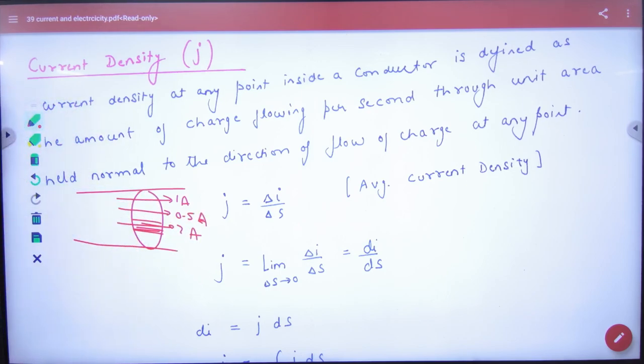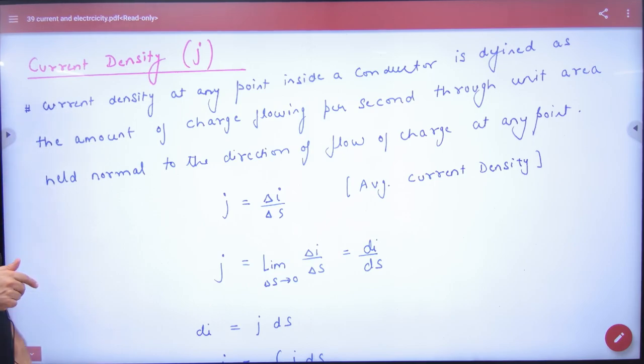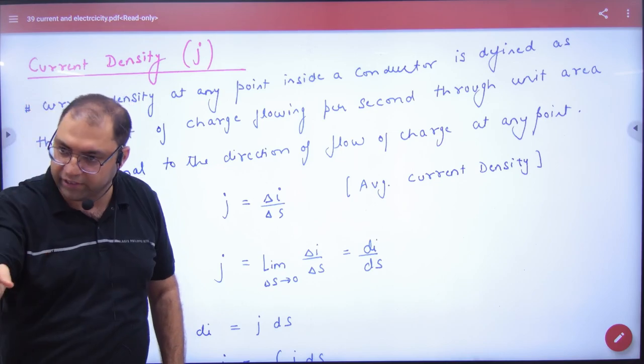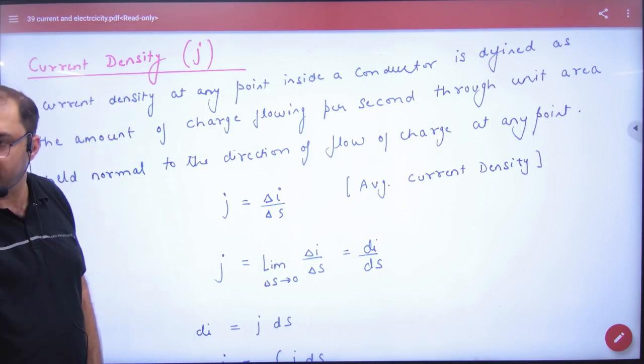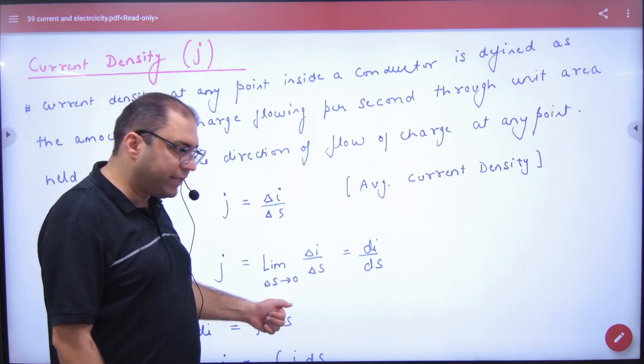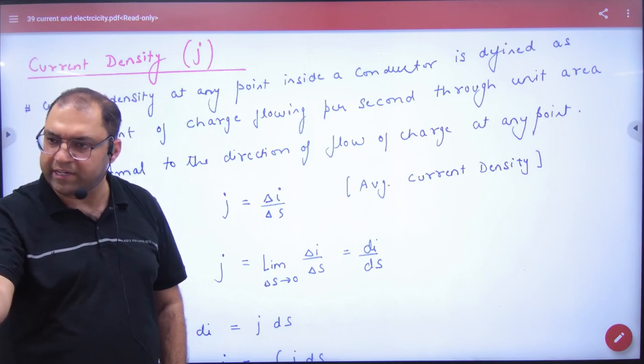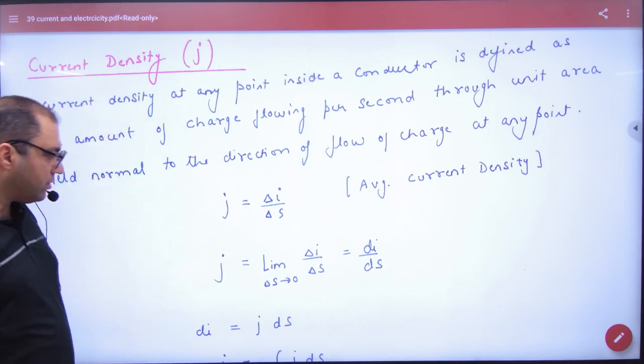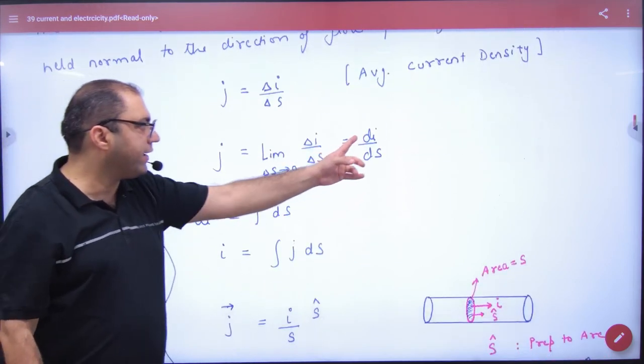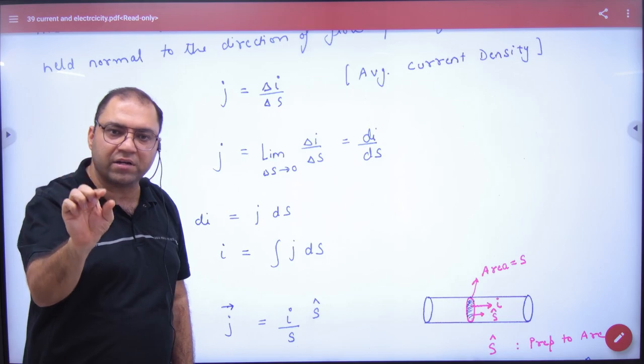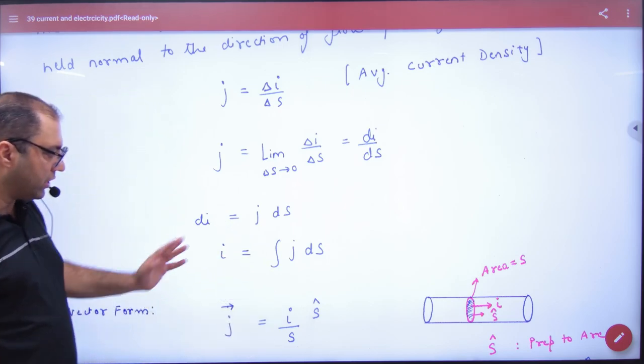To ek concept hai instantaneous current density. To kya karenge? Isko limit lagayenge, delta S ka interval bohut kam karenge. To kya ayega? dI by dS. To kisi bhi instant per kitna rate of change of current with respect to area cross section is known as j. Cross multiply karenge to dI kya ayega? j dS. Agar total current nikalna hai aapko poori wire ke cross, to kya karna padega? Integrate karenge, total current aa jayega.